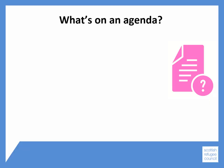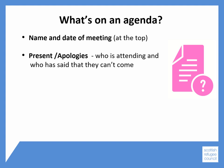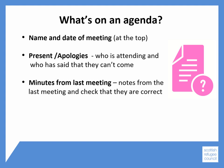So let's think about what should be on an agenda. Your agenda should include the name and date of the meeting at the top. Present and apologies — this is who is attending and who has said that they can't come. Minutes from the last meeting — this is when everyone looks at the notes from the last meeting and checks that they are correct.